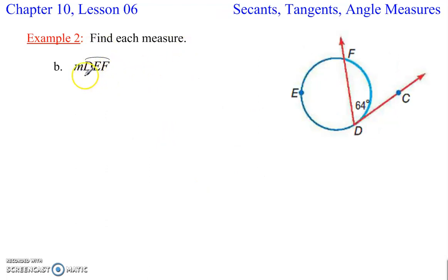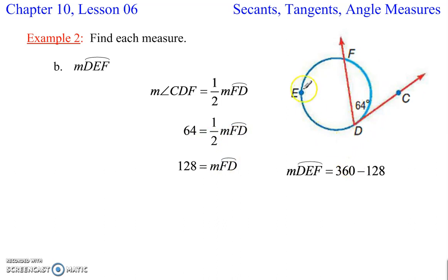We want to find the measure of the arc DEF. So that's this big one right here. Our strategy is going to be we find the small one, and then subtract that from 360 to find the big one. This is 64, which means that is half of this arc right here. So that's half of the arc FD. So if we multiply that by 2, we get the arc FD is 128. And then 360 minus 128 is 232.